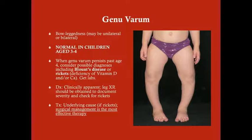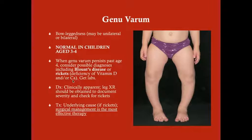If genu varum persists past age four, you should consider pathologic diagnoses. Causes include Blount's disease — the most common idiopathic cause — and rickets, whether from vitamin D deficiency, calcium deficiency, or hypophosphatemic (familial) rickets. Diagnosis is clinically apparent; you should get labs and a leg x-ray to document severity and check for bone demineralization from rickets.